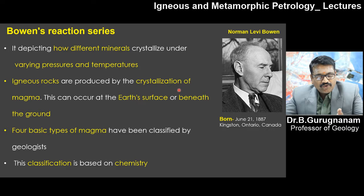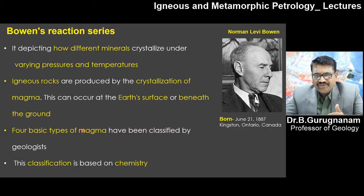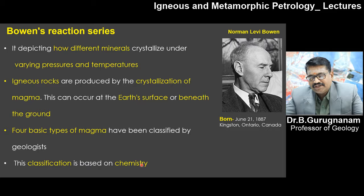We know that Igneous Rocks are the product of crystallization of magma, and they are normally found on the surface, near the surface, or below the surface. Igneous Rocks are classified based on four basic types of magma, classified by the famous geologist NL Bowen based on the chemistry of magmatic characteristics.